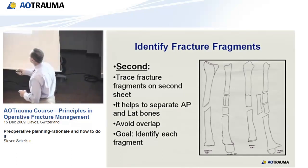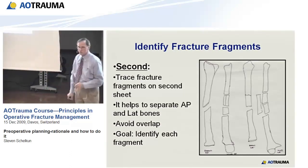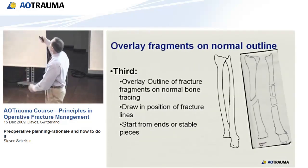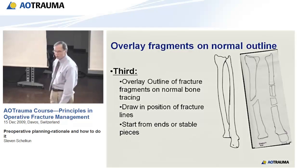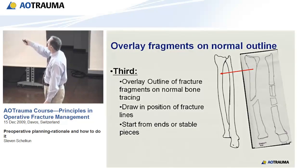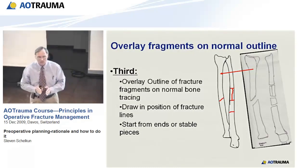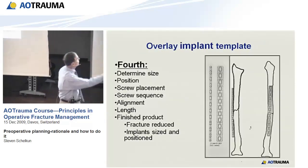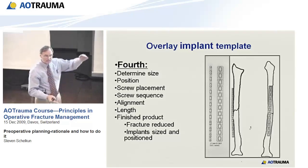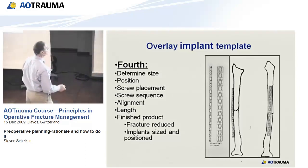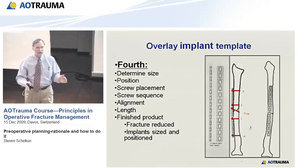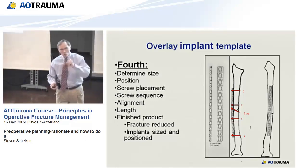The goal is to identify each fracture fragment and understand the bony injury. Thirdly, you simply overlay your fracture fragments on the normal bone, drawing them in position, and you end up with an outline of a normal bone with the fracture lines in place — so you know how it should look when it's reduced. Fourthly, you overlay your implants on this reduced fracture, which helps you determine the size and position of the implant, screw placement, and the sequence of screw placements. The finished product is a reduced fracture with implants sized and positioned.